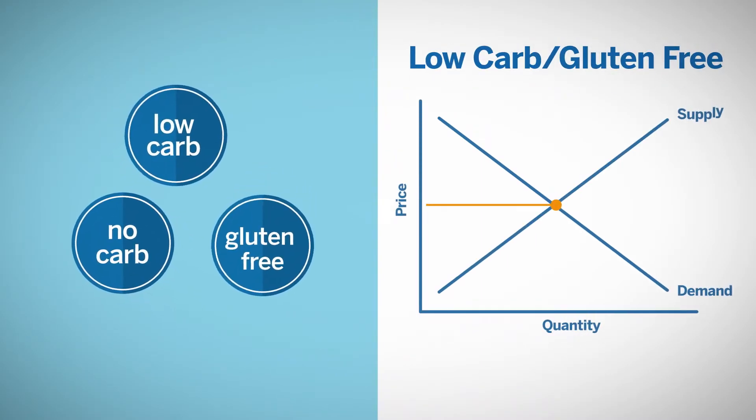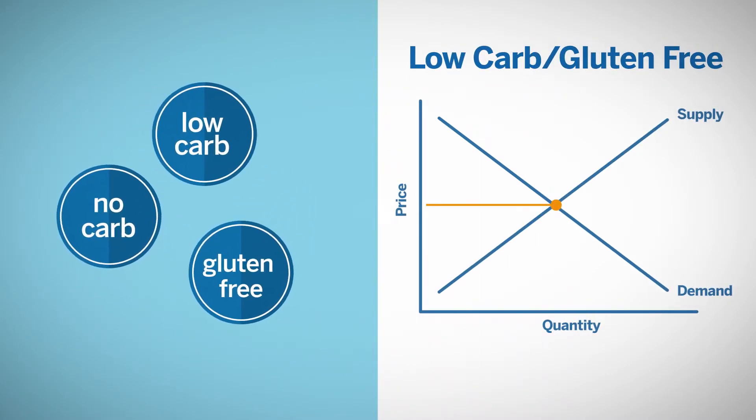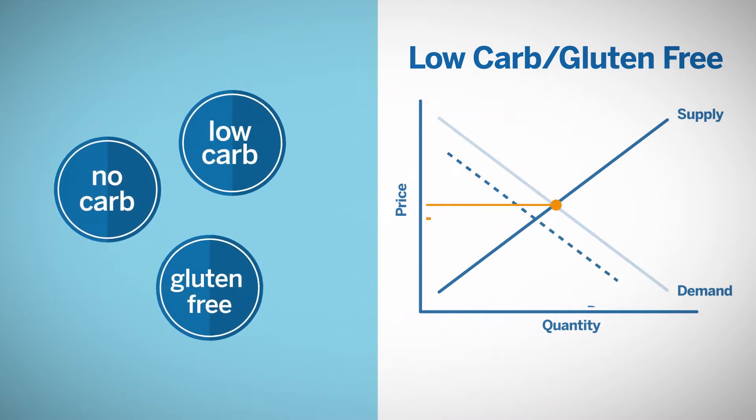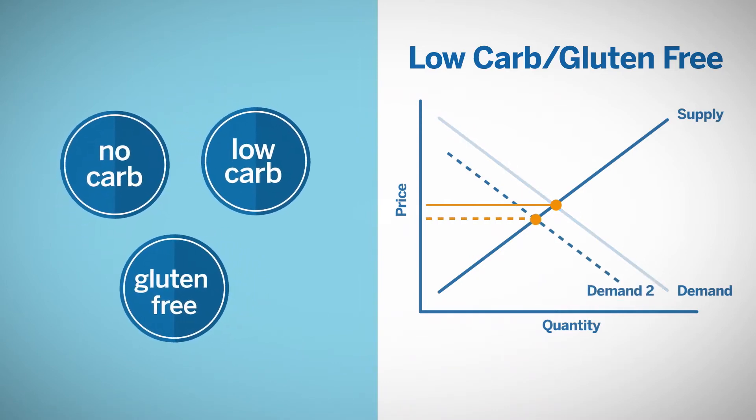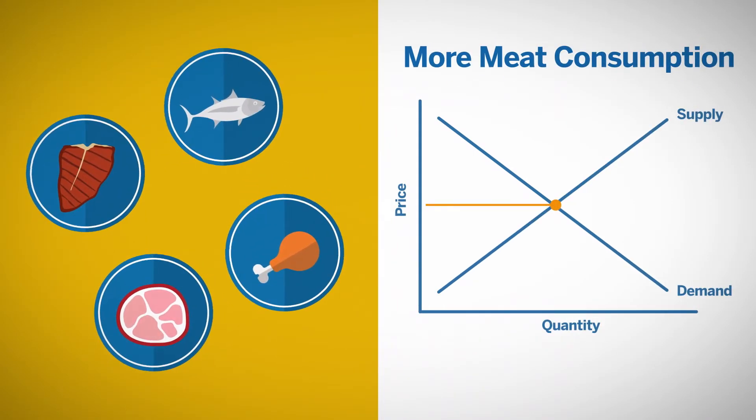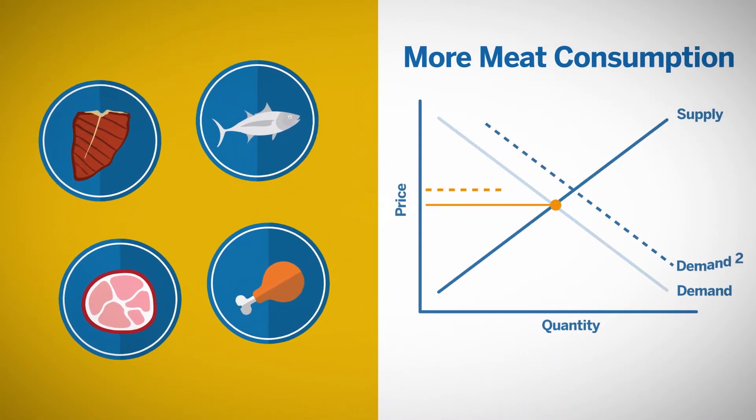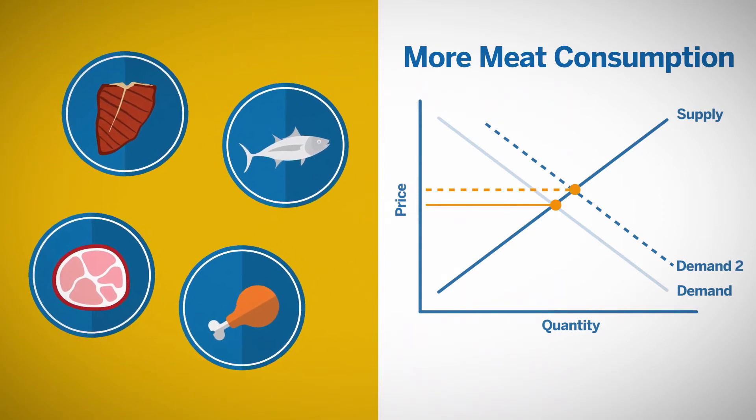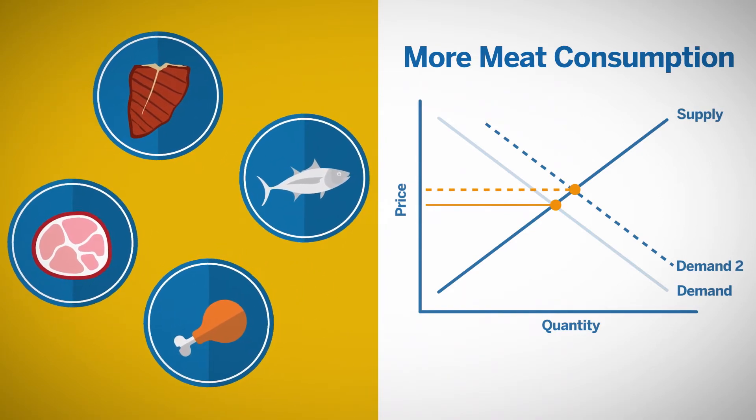Finally, ever-changing consumption and dietary trends, such as low-carb and gluten-free diets, tend to lower the demand for certain whole grains and grain-based staples. However, these trends are often counterbalanced by higher consumption of meat, fish, and poultry, again leading to an increase in the demand for grains and oilseeds used to manufacture livestock feed.